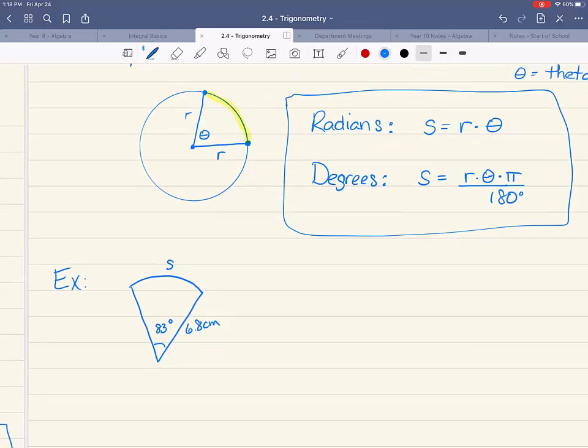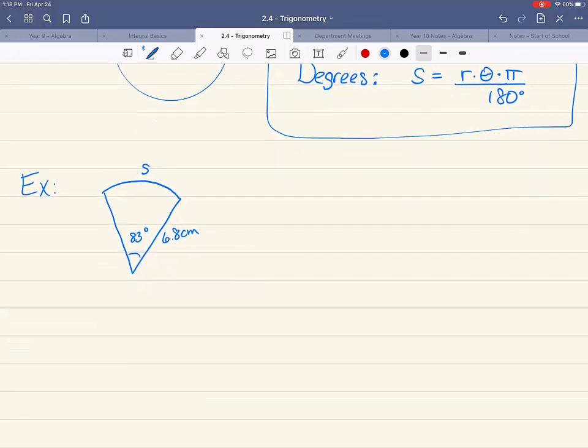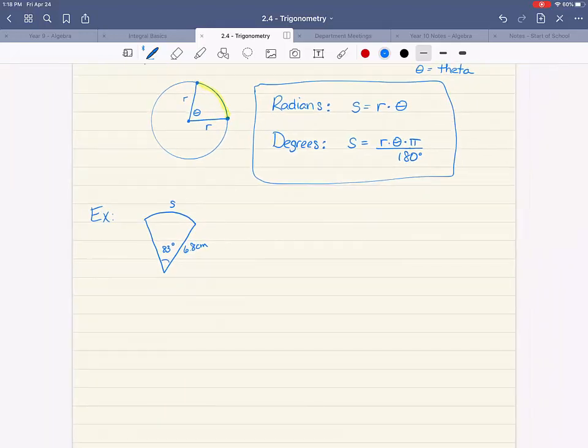Because we are given degrees, we have to use the degree formula. This will be S equals R times theta times pi over 180 degrees.